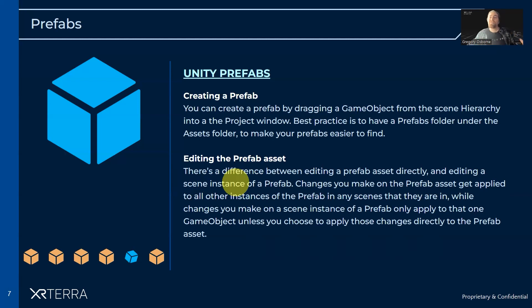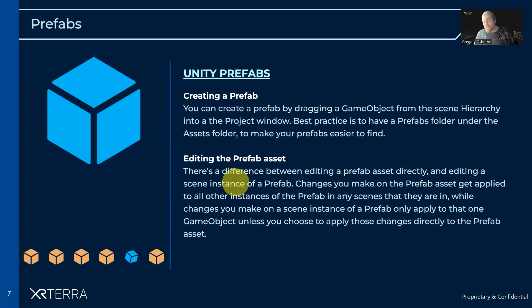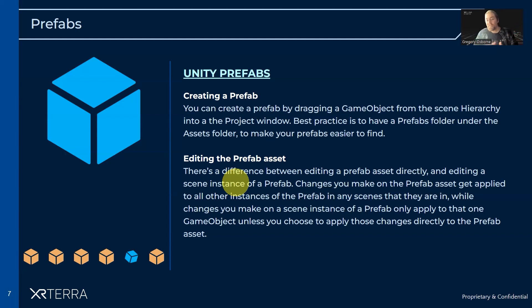Once you have a prefab asset in the project window, if you want to make a change to all instances of a prefab, then you edit that asset directly. But if you just want to have a whole bunch of variations on a prefab, then you just edit an instance in the scene. So you can have like 50 different instances of the prefab, edit one of them to make some change that doesn't necessarily apply to all the other prefabs, unless you purposefully do that.